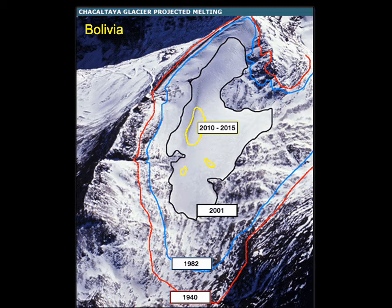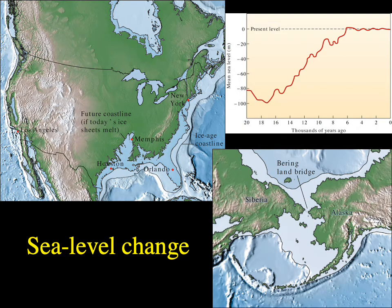When glaciers around the globe melt, sea level rises. Around 18,000–20,000 years ago, sea level was significantly lower because much seawater was locked up in large glaciers. As those glaciers melted from about 18,000 years ago to the present, meltwater entered the oceans, causing sea level to rise to current levels.